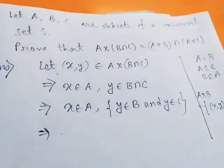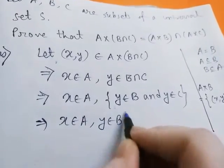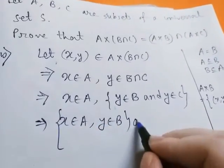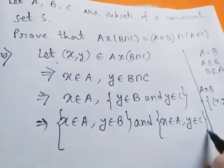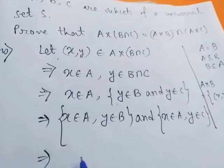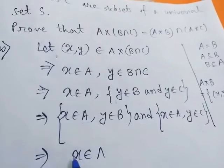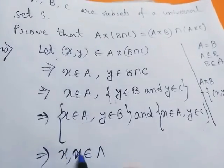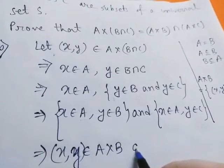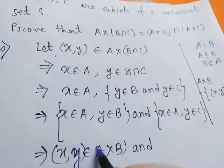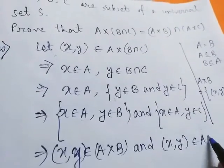This implies we can write this as: x belongs to A and y belongs to B, and x belongs to A and y belongs to C. Therefore, (x, y) belongs to A cross B and (x, y) belongs to A cross C.